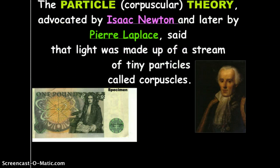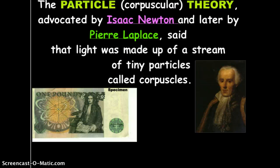Now, the second theory was called the particle theory. And this was advocated by Isaac Newton and later Pierre Laplace. And they said that light was made up of a stream of tiny particles called corpuscles. And that these tiny particles actually traveled in very distinct, straight patterns.